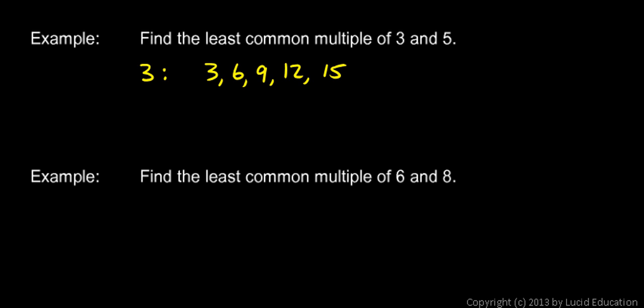And some multiples of 5. We can list 5, 10, and 15. And 15 shows up in both lists. It's a common multiple of 3 and 5. And there are no smaller numbers. There's no number less than 15 that is a multiple of both 3 and 5. So that's the least common multiple of 3 and 5. So that's my answer, 15.